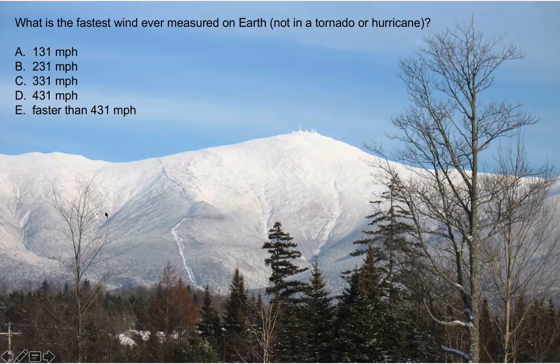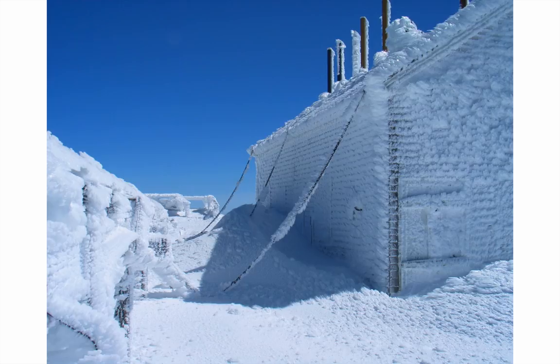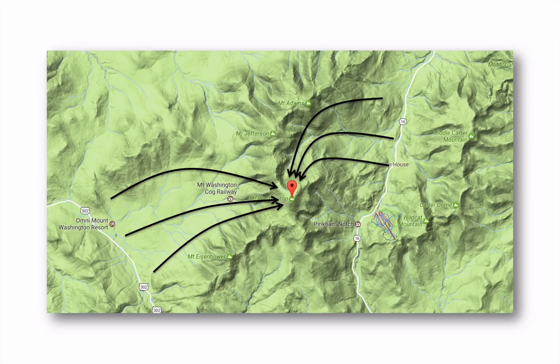It turns out that wind speed record was set at Mount Washington in the northeastern United States — 231 miles an hour. In winter, Mount Washington looks incredible, with ice rimed against the buildings. Why such extreme weather there? There are a couple of interesting topographical features that focus the wind right over the top of the mountain, and the mountain sticks up pretty high into the atmosphere near the jet stream where winds are automatically faster.